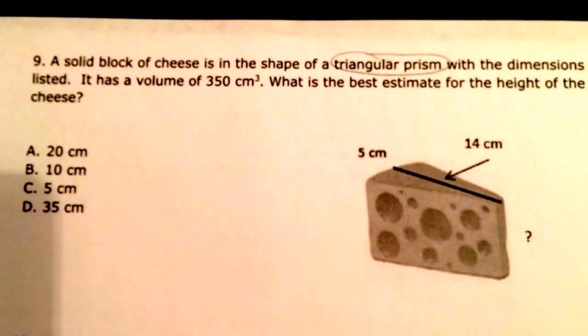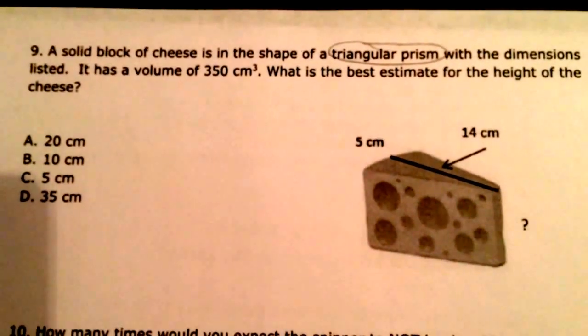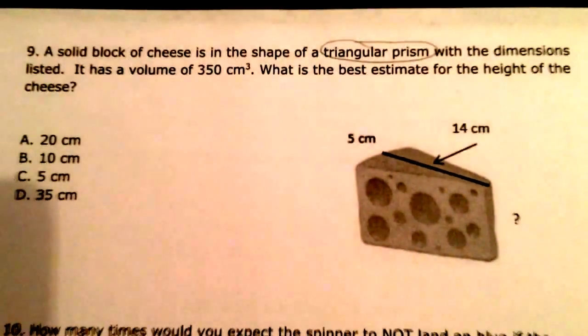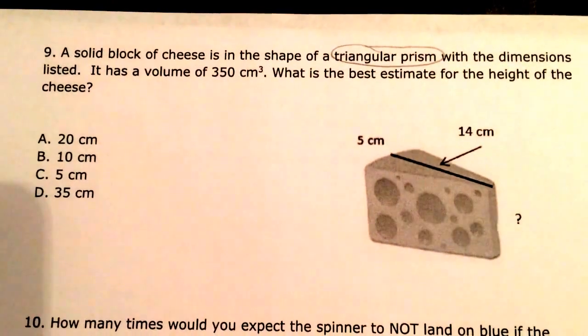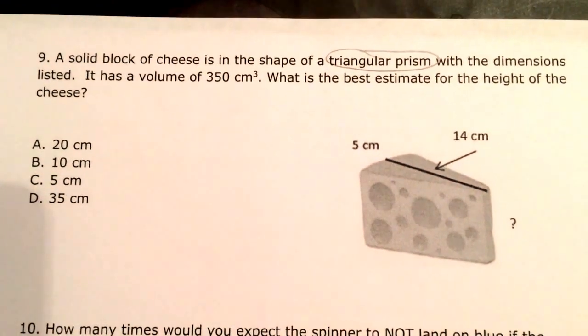A solid block of cheese is in the shape of a triangular prism with the dimensions listed. It has a volume of 350 cubic centimeters. What's the best estimate for the height of the cheese?